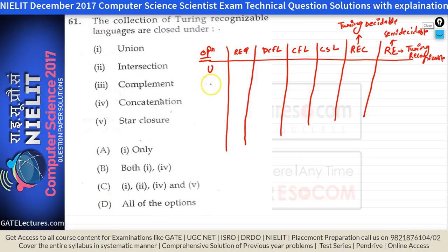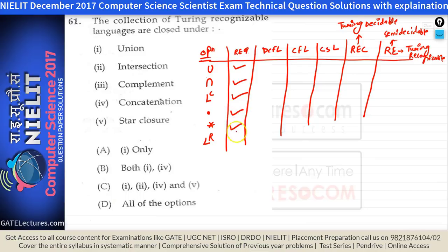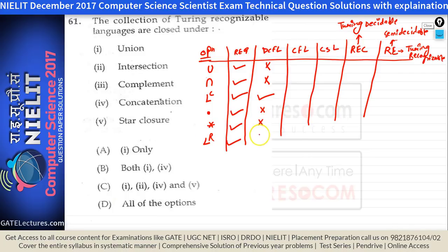The operations we consider are union, intersection, complementation, concatenation, Kleene star closure, and reversal. Regular languages are closed under all operations. DCFLs are not closed under union and not closed under intersection, but they are closed under complementation. DCFLs are not closed under concatenation, Kleene closure, or reversal.